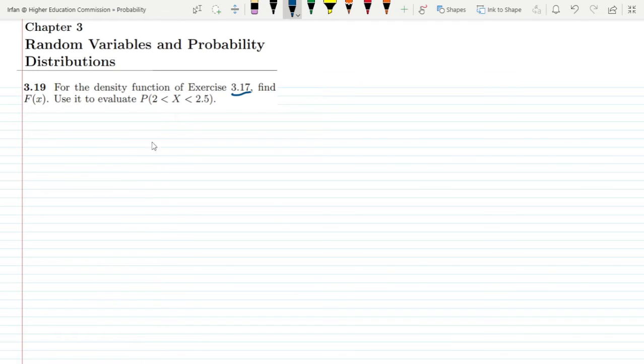So previously we have seen that in that question we have a uniform PDF which starts from 1 and ends at 3.